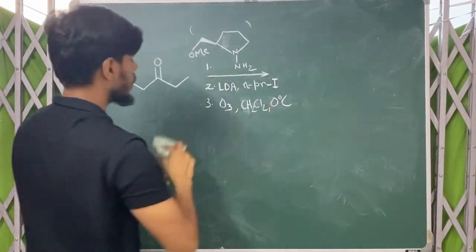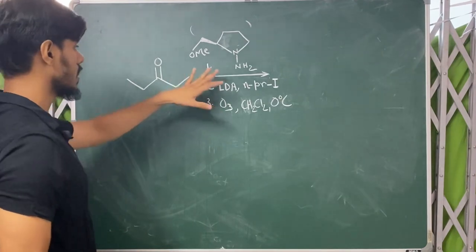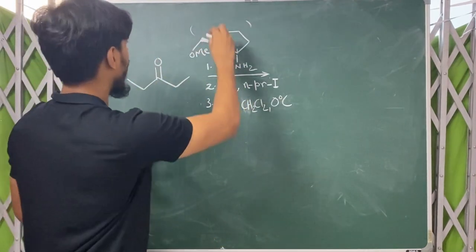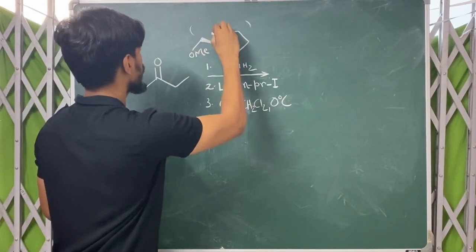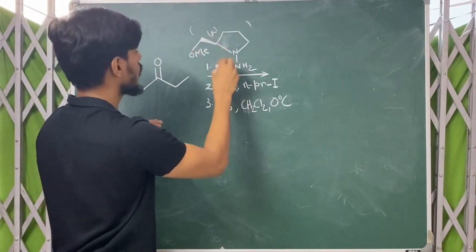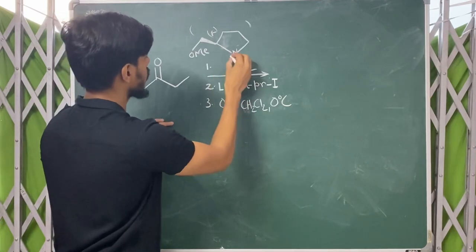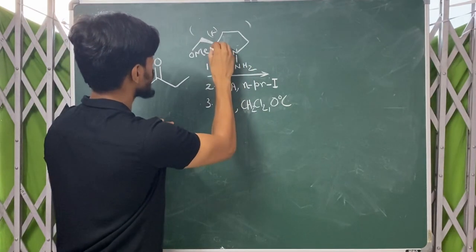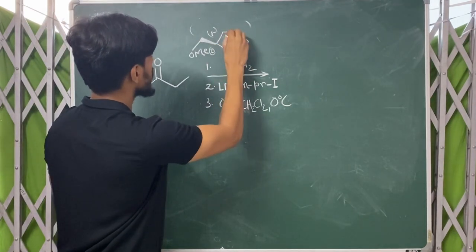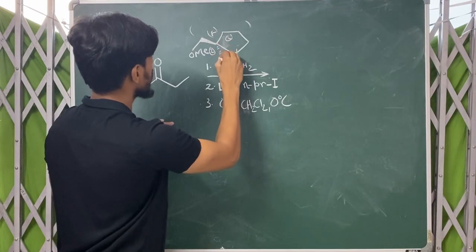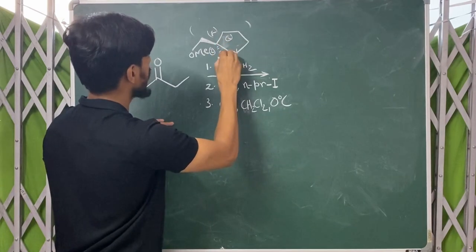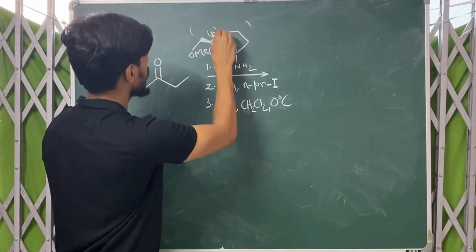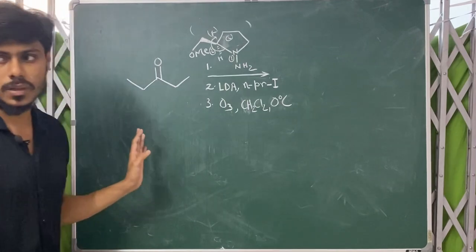First I will use the R compound, R-AMP. This configuration is R: this is 1, this is 2, this is 3, and hydrogen is below. So 1, 2, 3 is clockwise — this is R.